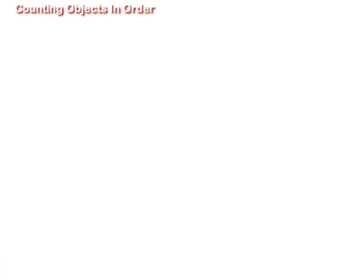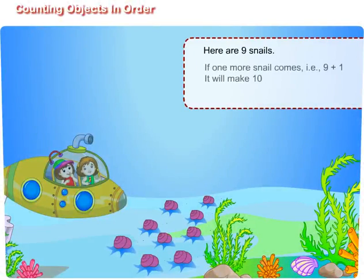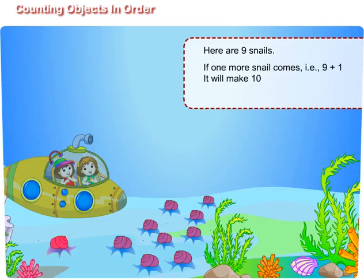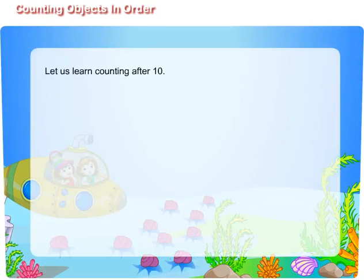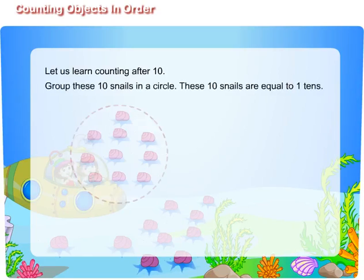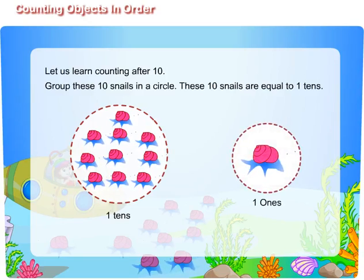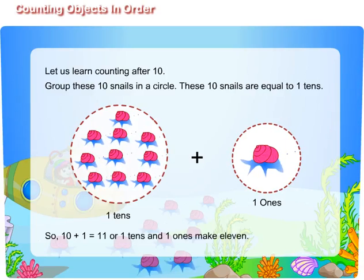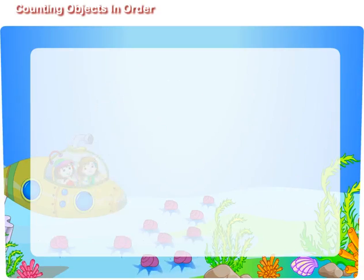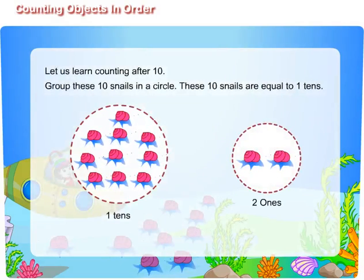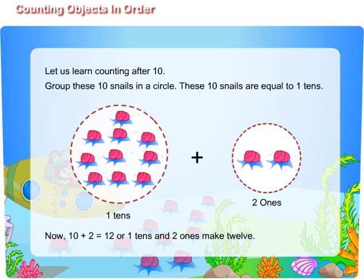How can you get number ten? Look. Here are nine snails. If one more snail comes, that is, nine plus one, it will make ten. Thus, we have ten snails. Let us learn counting after ten. Group these ten snails in a circle. These ten snails are equal to one tens. Draw another circle. Now, place one snail in this circle. So, ten plus one is equal to eleven. Or, one tens and one ones make eleven. Similarly, place two snails in the circle. Now, ten plus two is equal to twelve. Or, one tens and two ones make twelve.